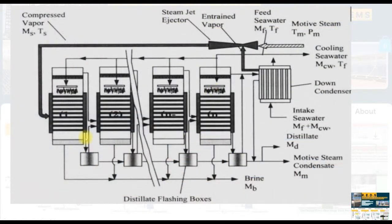This is the process of MED thermal vapor compression. This is the end condenser and this is the internal vapor from the end condenser. This is the motive steam coming from the solar field. This is the compressed vapor going to power on the first effect thermally, and the process will continue simultaneously. This is the cooling feed water — we have intake of total feed water which feeds the MED and the cooling water for the condenser unit.